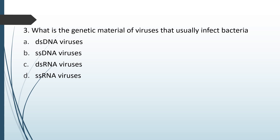What is the genetic material of viruses that usually infect bacteria? Options: DS-DNA viruses, SS-DNA viruses, DS-RNA viruses, SS-RNA viruses. The correct answer is option A — DS-DNA viruses, that is double-stranded DNA viruses.